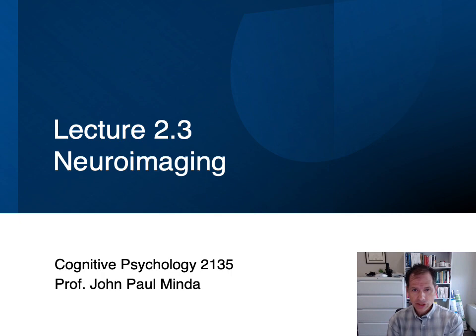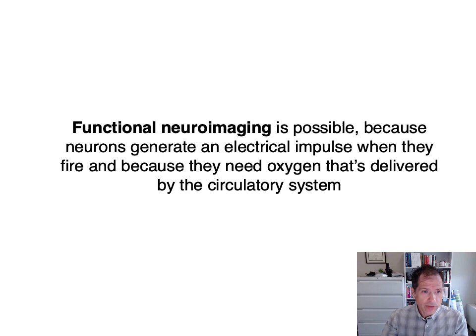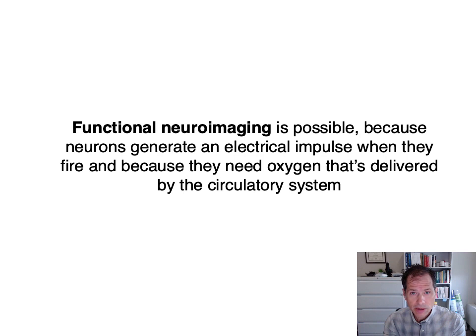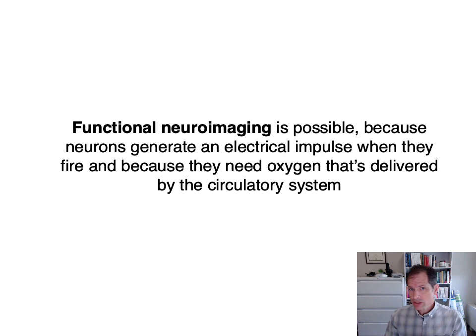Hi everyone. I've created this short video to supplement some of the regular lecture, and the content of this video is on neuroimaging. We're going to talk about some neuroimaging techniques, primarily functional neuroimaging, and we'll go through some examples of each one. Functional neuroimaging — taking an image of the brain while it's doing something and making inferences about what area of the brain is carrying out the task — is possible because neurons generate an electrical impulse when they communicate with each other.